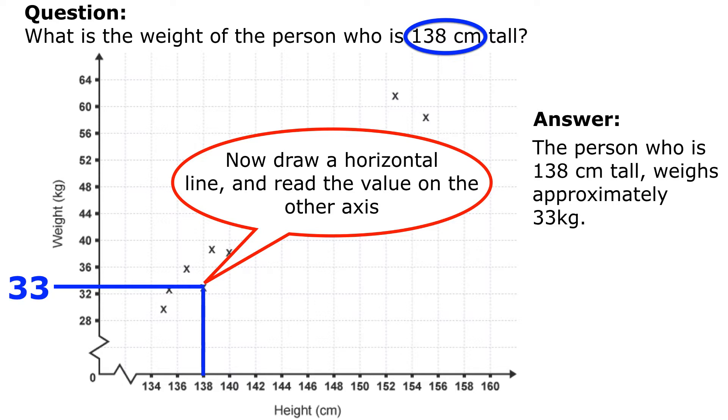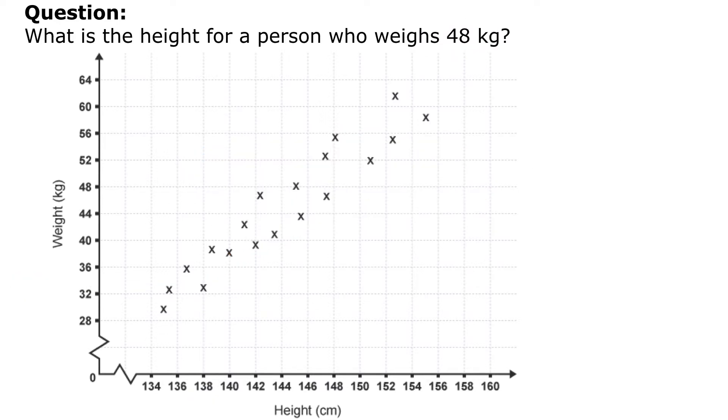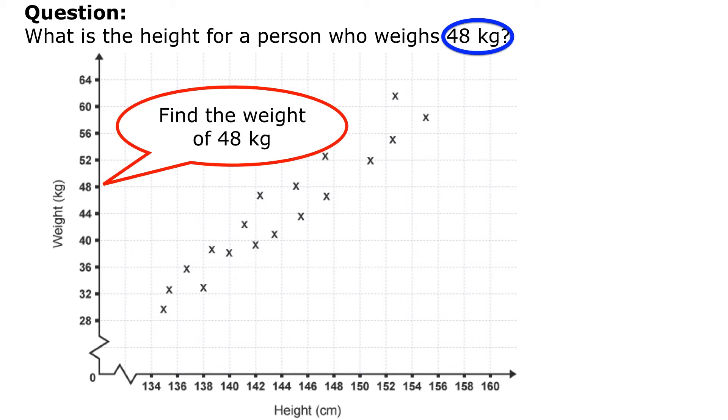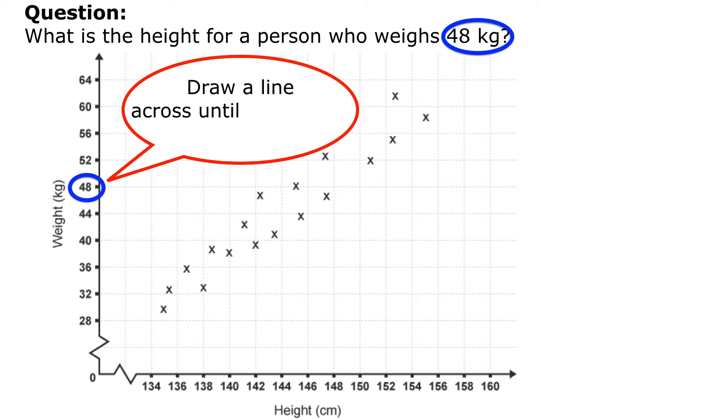So I was looking for that 138. Now this is doing an opposite one, so now I want to know what is the height for a person who weighs 48 kilograms. So now I've given you the weight of 48 kilograms, so we need to go to our vertical axis and we need to find that weight of 48 kilograms. All right, then I'm going to draw a line going across until I hit the data point.